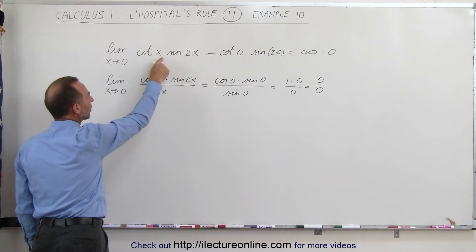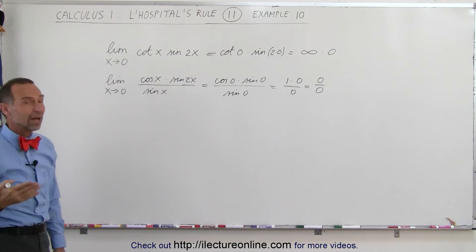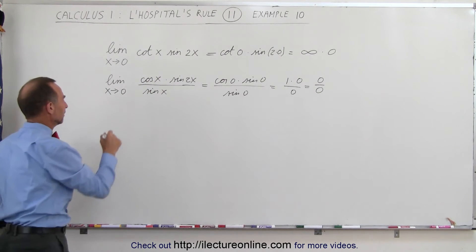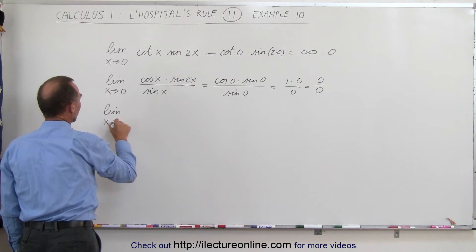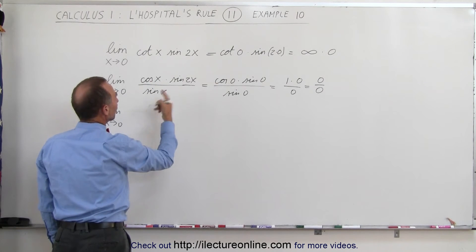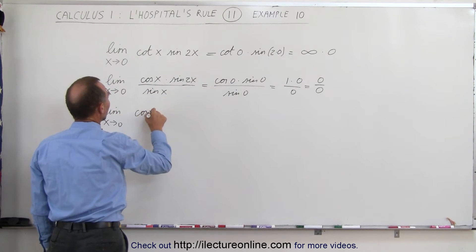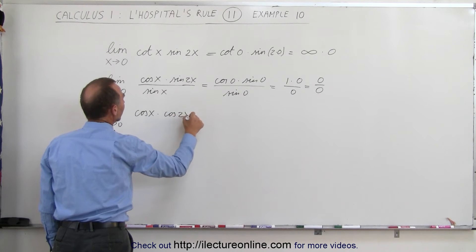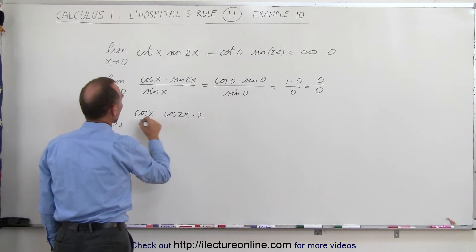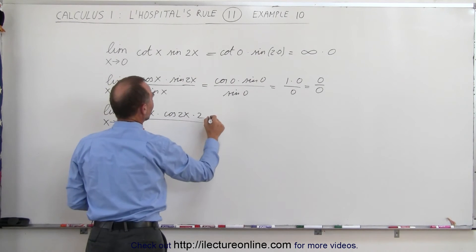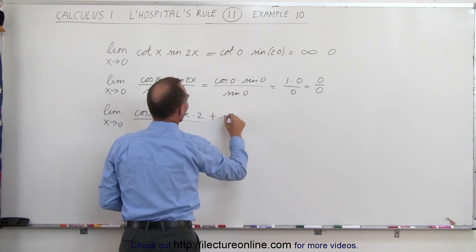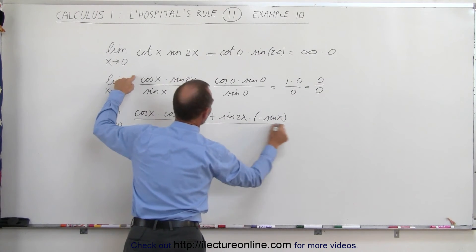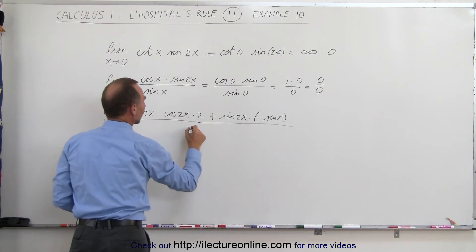When we change the function to this form, we now have it in a form where we can use L'Hôpital's rule. Let's take the derivative of the numerator and the derivative of the denominator. The numerator is a product, so we take the first, cosine of x, times the derivative of the second: the derivative of sine of 2x is cosine of 2x times 2. Plus the second, sine of 2x, times the derivative of the first, which is minus sine of x. The whole thing is divided by the derivative of sine of x, which becomes cosine of x.